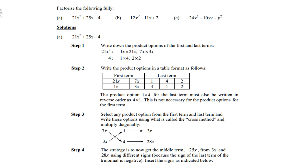Right, let's look at the following examples. Example A: 21x squared plus 25x minus 4. So, step 1: Write down the product options of the first and last terms. So, 21x squared can be 1x times 21x, 7x times 3x. And options for 4 can be 1 times 4 and 2 times 2.